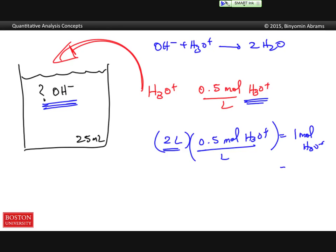Which means I have 1 mole of hydroxide. Or I must have had 1 mole of hydroxide. And if I have 1 mole of hydroxide divided by 0.025 liters, this gets me my concentration of sodium hydroxide.